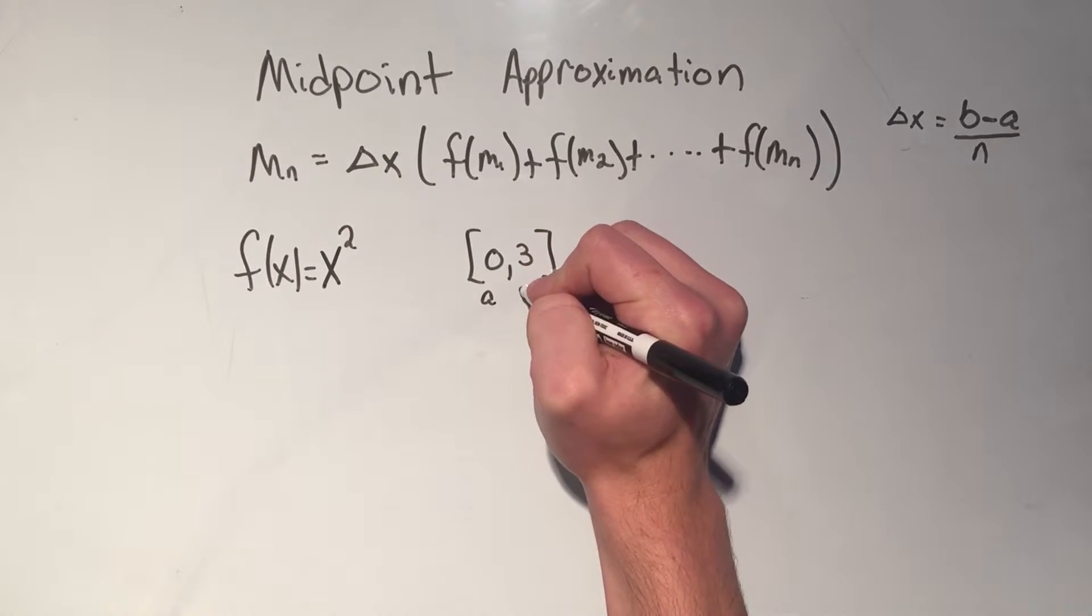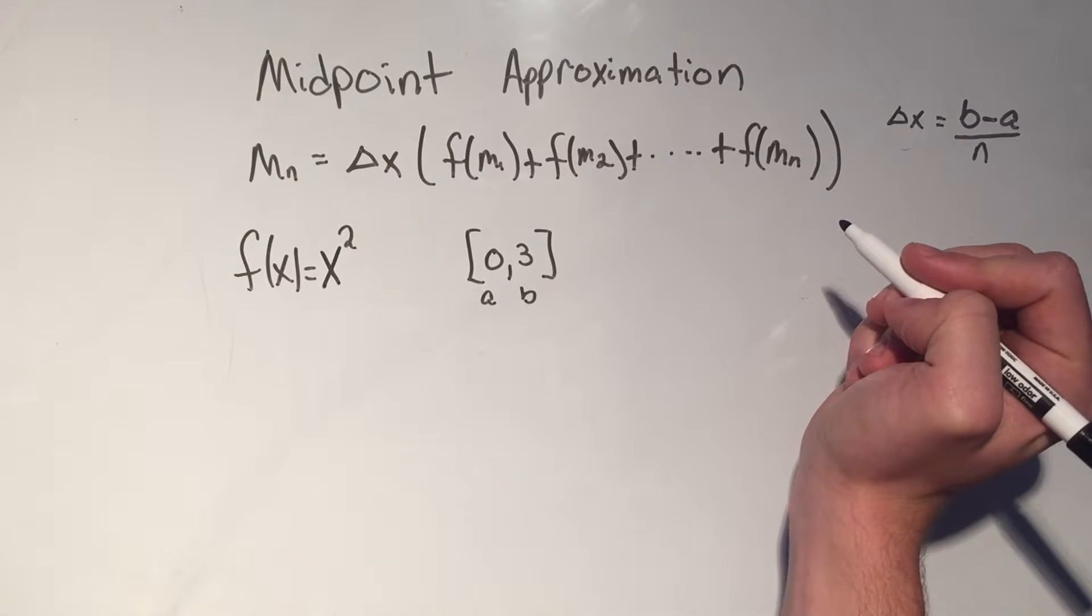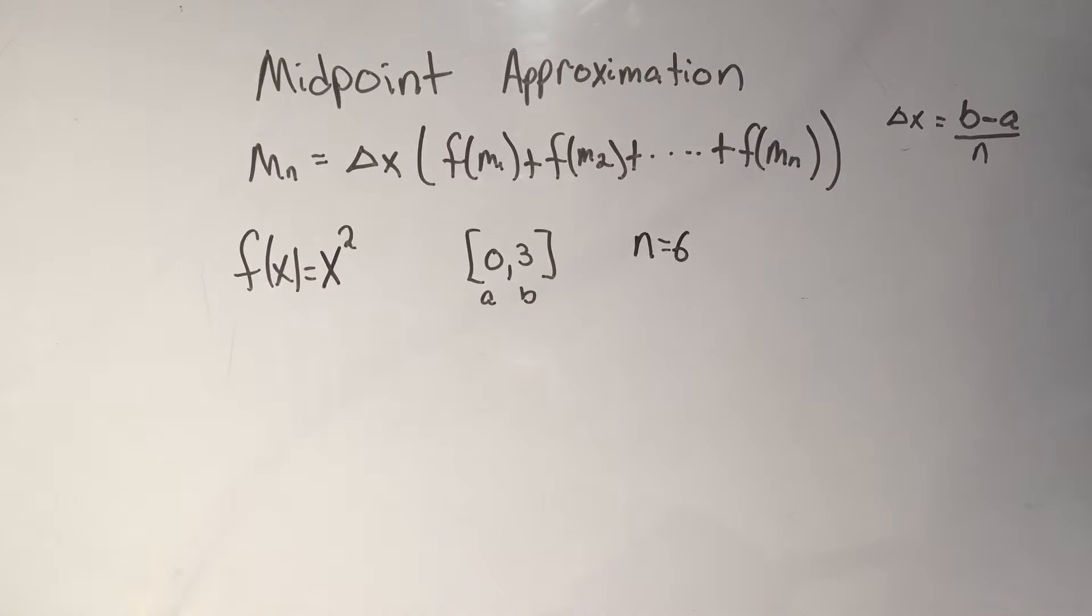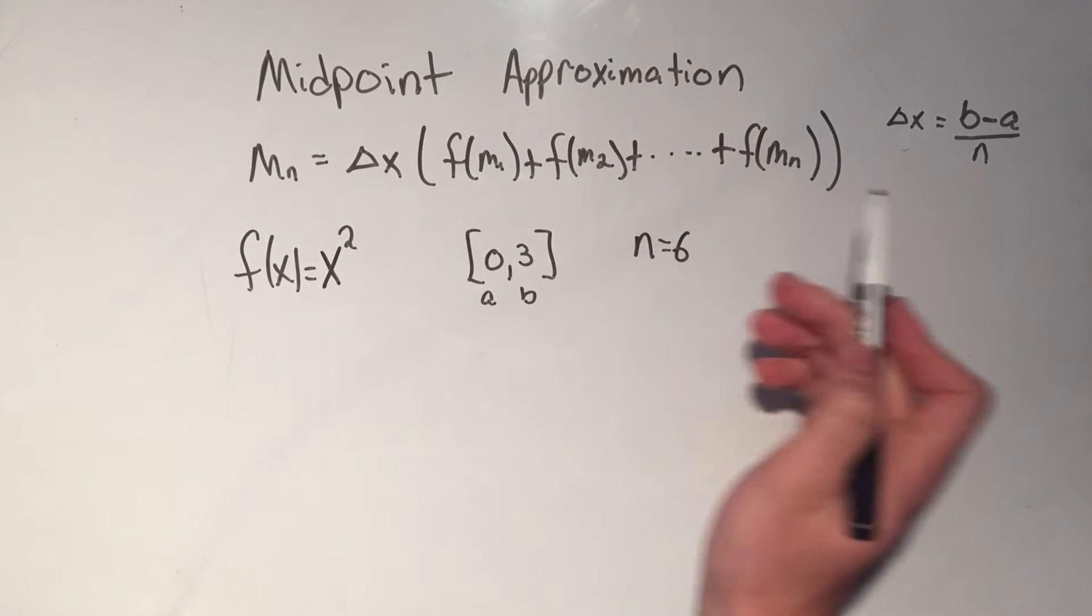And I'm going to do it from 0 to 3. Remember, that means a is 0 and b is 3. And I'm going to use 6 rectangles, or 6 subintervals.